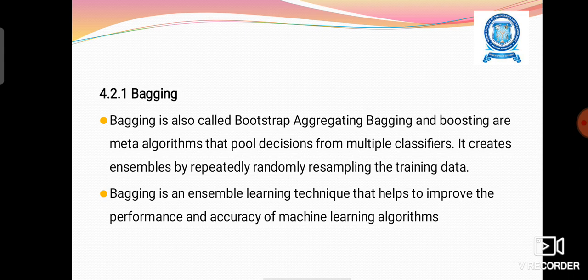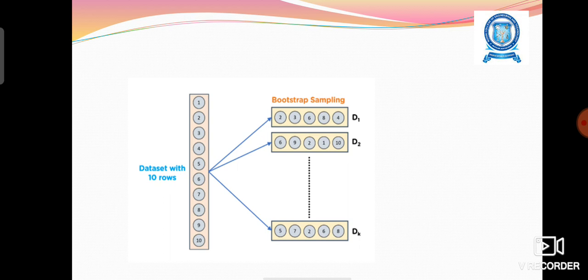Bagging is an ensemble learning technique that helps to improve the performance and accuracy of machine learning algorithms. This diagram shows the data sampling will be taken from the entire dataset.